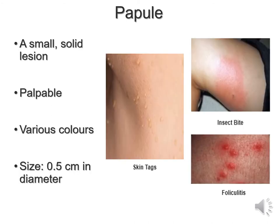A papule is a small, solid lesion and it's palpable. They come in various colours, but typically they are pink or flesh-coloured. Size is typically about 0.5cm in diameter, though they can be larger depending on what's caused them. Examples include skin tags, which some of you may have, insect bites, or inflammation of follicles in the skin — folliculitis.